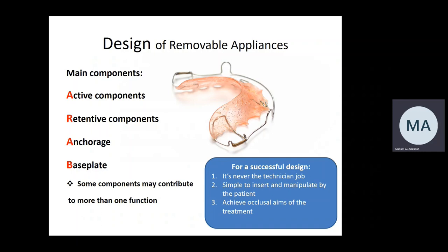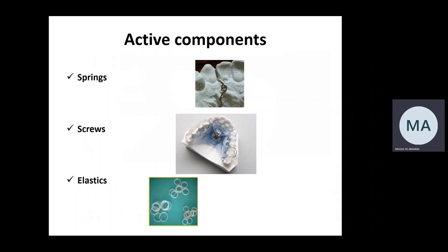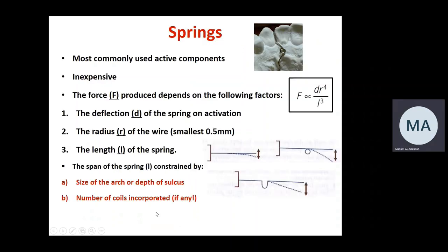The basic design of removable appliances has four main components: active components, retentive components, anchorage, and base plate. The appliance design is the clinician's responsibility, not the technician's. The design should be simple to insert and manipulate by the patient, achieve the occlusal aims of treatment, and not be overly complicated. Some components contribute to more than one function. Active components fall into three main categories: springs, screws, and elastics.